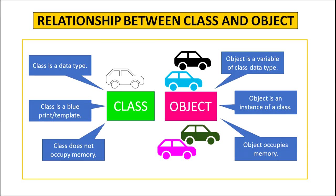Let us understand the relationship between class and object again. Class is a data type; object is a variable of class data type. Class is the template or blueprint; an object is an instance of a class. Class does not occupy any memory, however object occupies memory.